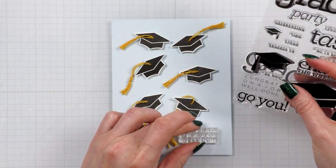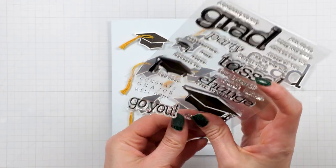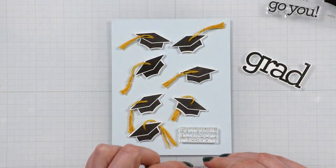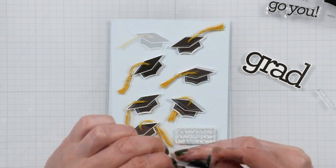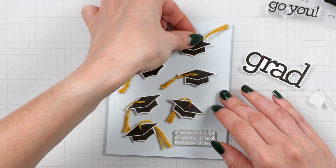I picked a light blue background as it goes well with the yellow tassels. I tried to keep the caps in two rows but rotate and flip them to add movement to this design.